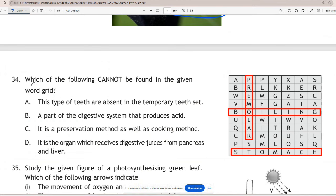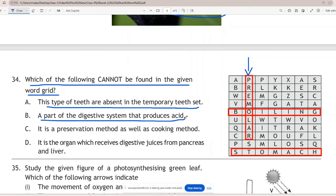Question 34: Which of the following cannot be found in the given word grid? Let's find the answer. Option A, this type of teeth are absent in the temporary teeth set is called premolars. Option B, a part of the digestive system that produces acid is called stomach. Option C, it is a preservation method as well as cooking method is boiling. Option D, it is the organ which receives digestive juices from pancreas and liver is called small intestine. In given word grid, premolars, stomach and boiling are available. Option D, small intestine, is not available. So the correct option is D.